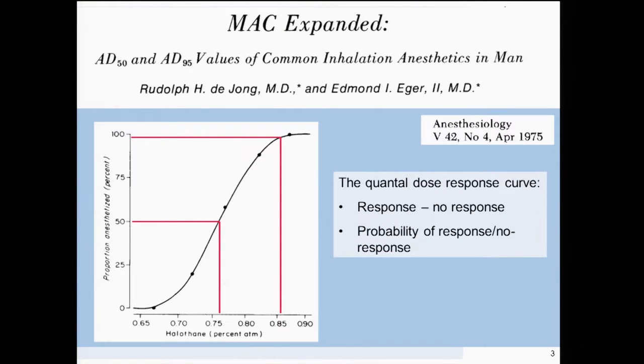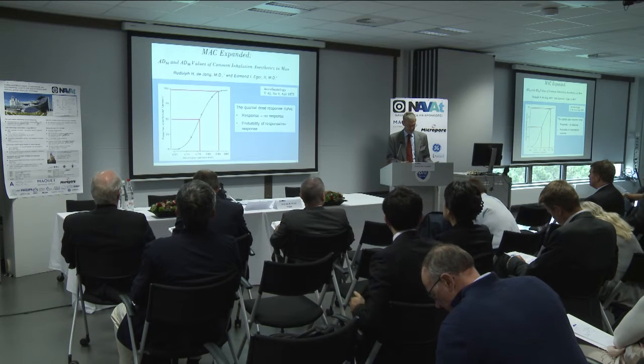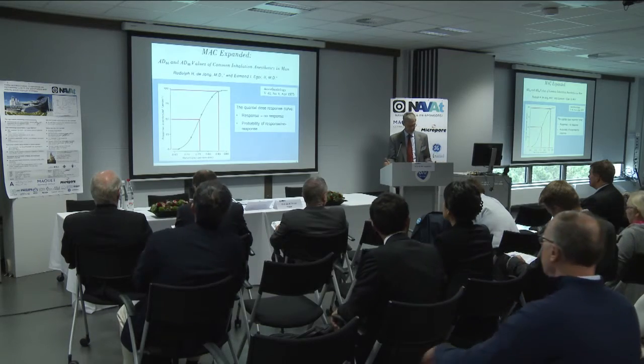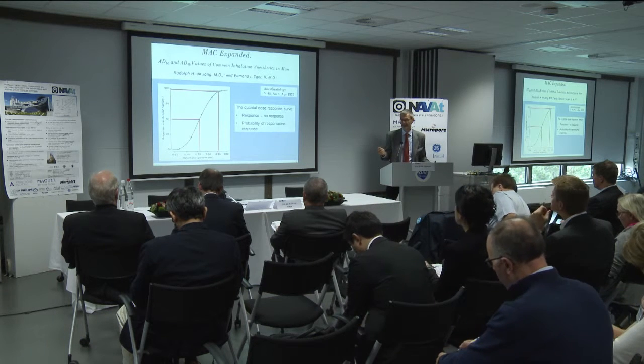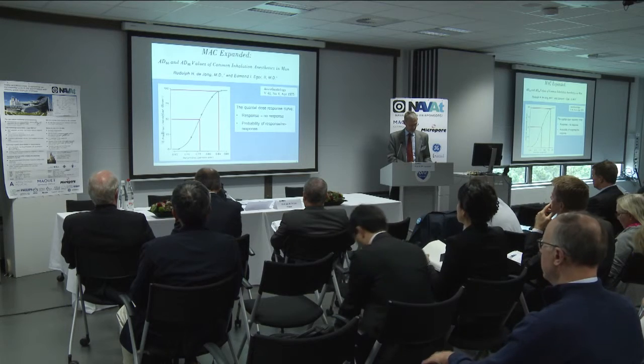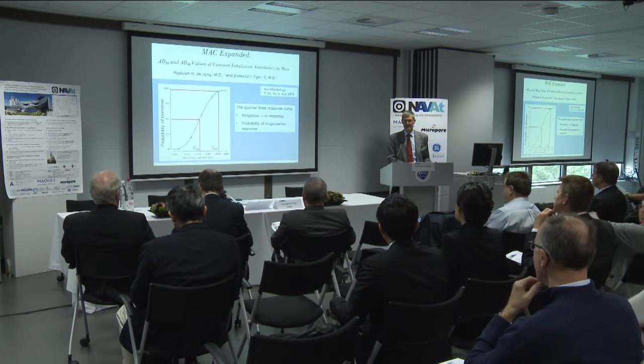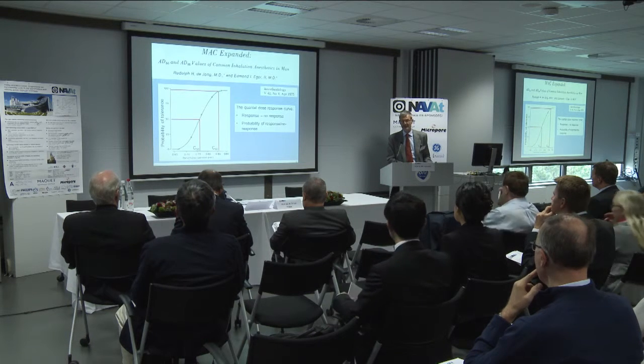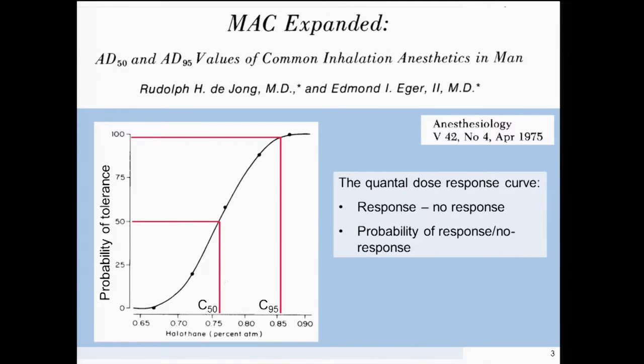What I am talking about is actually not a new concept — it is rather old. Already 40 years ago, the MAC of halothane was published, and the concept that with increasing halothane concentrations the number of patients moving on surgical incision will decrease is not new. The principle that the probability of a response can be considered as a depth of anesthesia indicator is not new. If we replace the number of patients not moving on incision, we can say probability of tolerance. The C50 — the concentration at which 50% of patients move or don't move — is the MAC, and the C95, the concentration where 95% of patients tolerate incision, equals about 1.2 MAC.